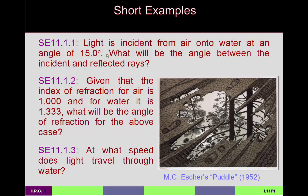First quick example: light is incident from air onto water at an angle of 15 degrees. We want the angle between the incident and reflected rays. According to the law of reflection, if the incident angle is 15 degrees, then the reflected angle is also 15 degrees, giving a total angle between incident and reflected rays of 30 degrees.